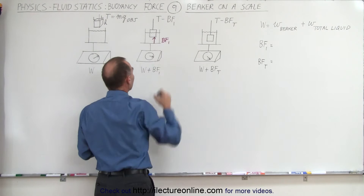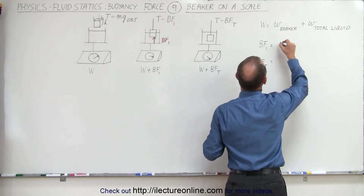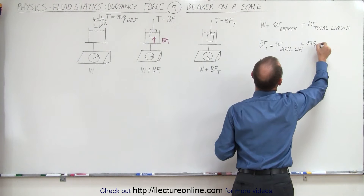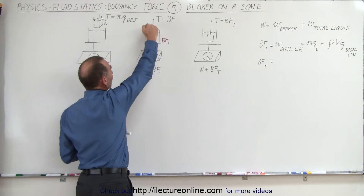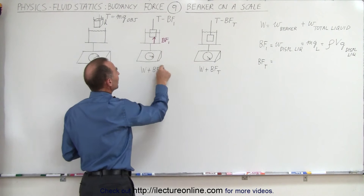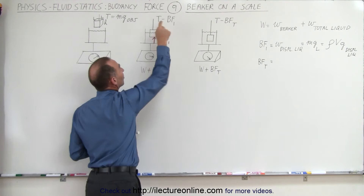Let's call that buoyancy force 1. Buoyancy force 1 is defined as being equal to the weight of the displaced liquid, which is equal to the mg of the liquid, which is equal to rho times v times g of the displaced liquid. So the amount of liquid that the object displaces by being partially submerged is the buoyancy force, and that is the additional reading on the scale.